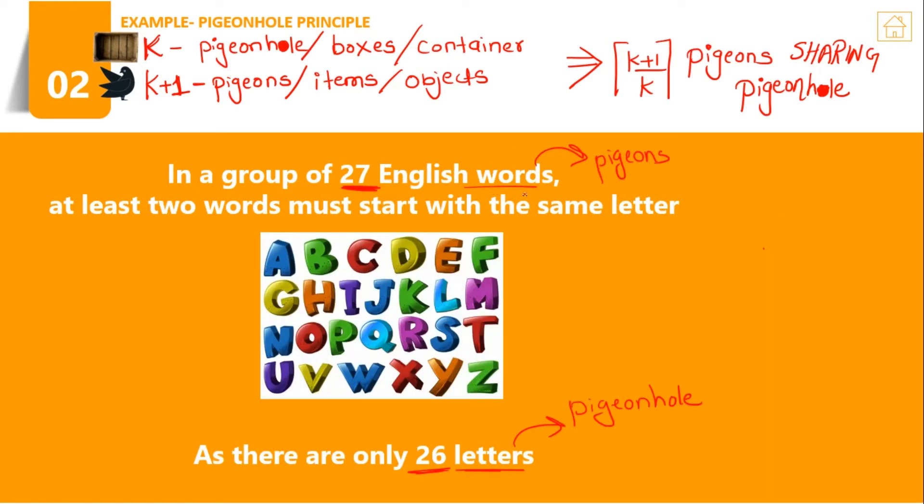In a group of 27 English words, at least 2 words must start with the same letter. Why? Because there are only 26 letters in English. So if you are talking about 27 English words, one must share a common first letter with the previous 26 letters. Here, 27 English words are my pigeons or items (k+1 value), and 26 letters is the pigeonhole, the actual possible value for my given data.